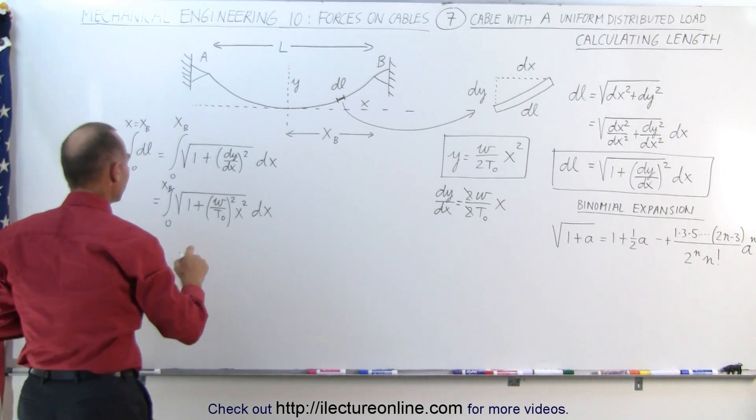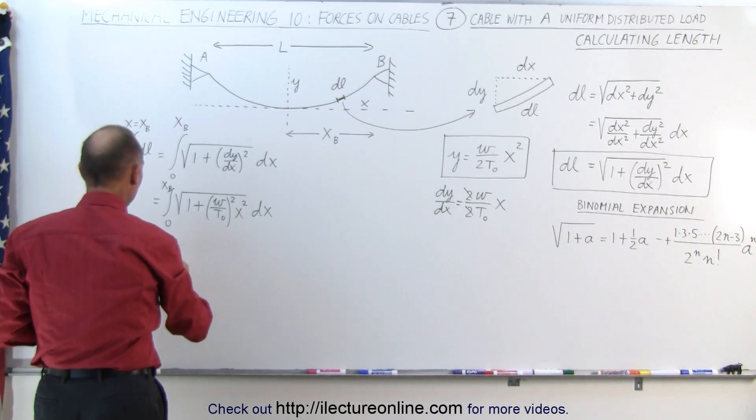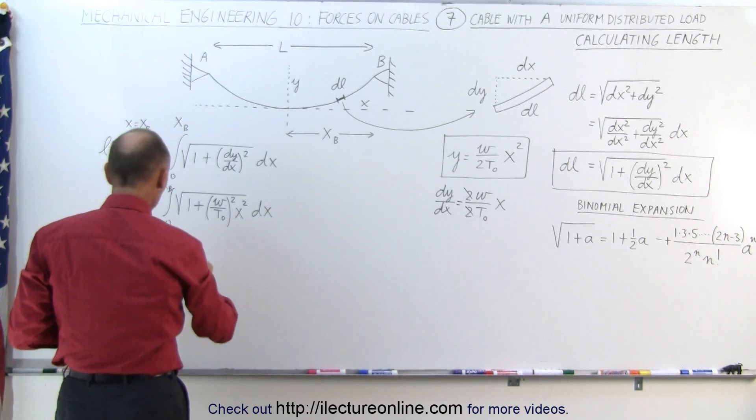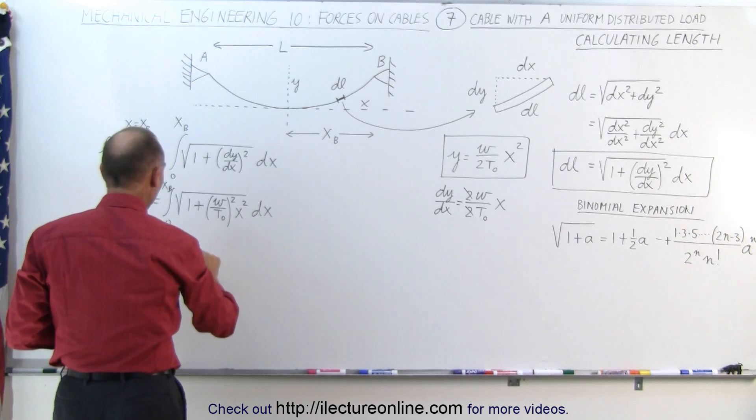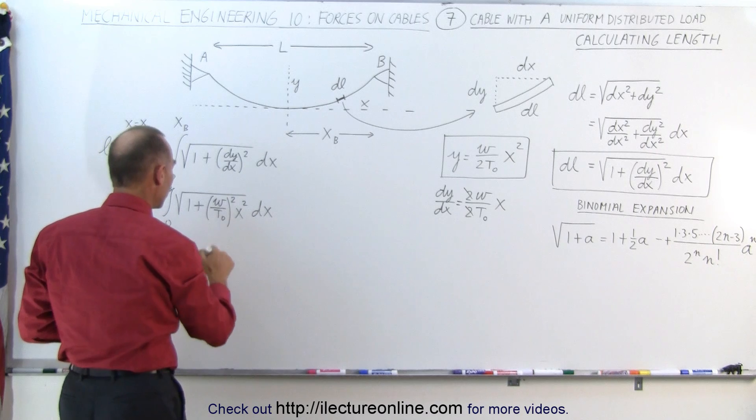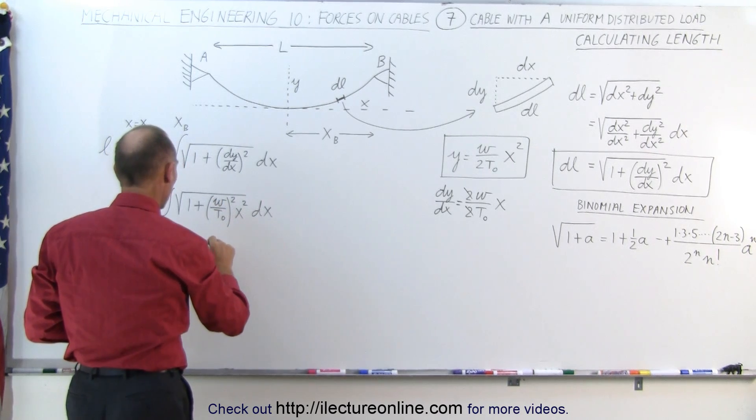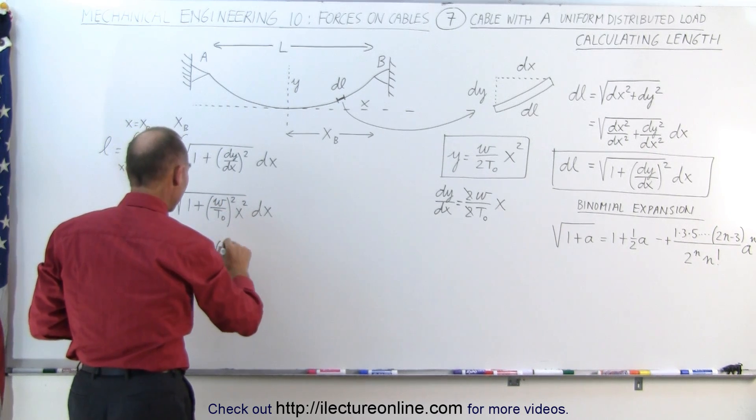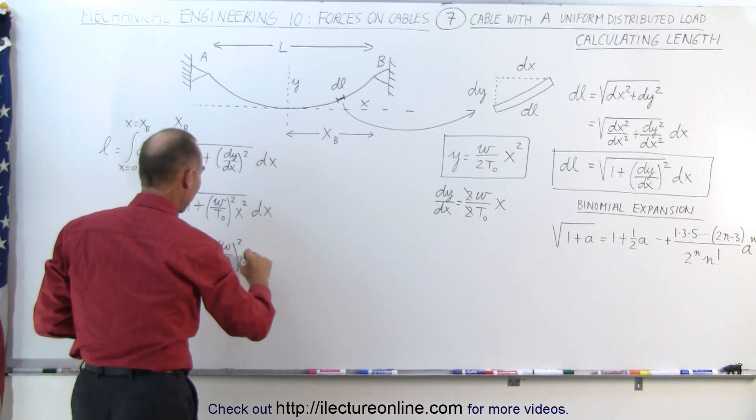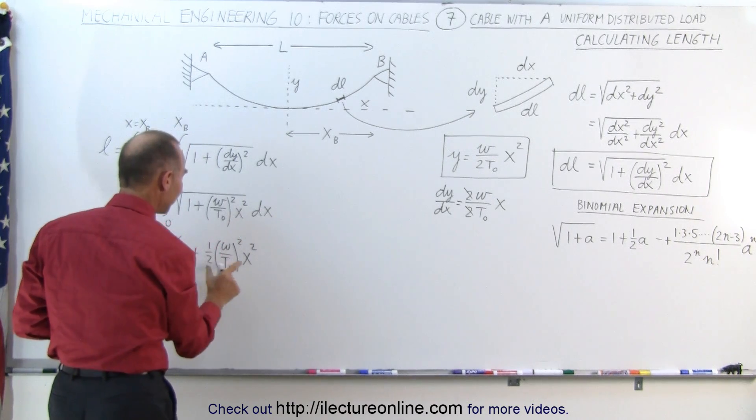So let's plug in what we have. This is equal to the integral from 0 to X sub B of 1 plus 1/2 a. Now remember, a is this quantity right here, so it would be 1/2 of that. So it would be 1/2 a, which is (omega/T sub naught) quantity squared times X squared. So this is half times a.